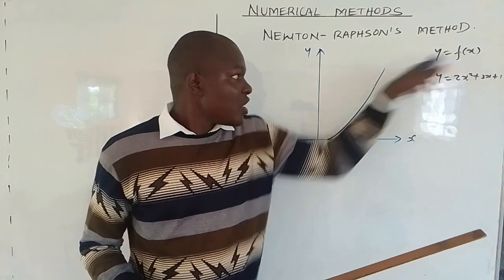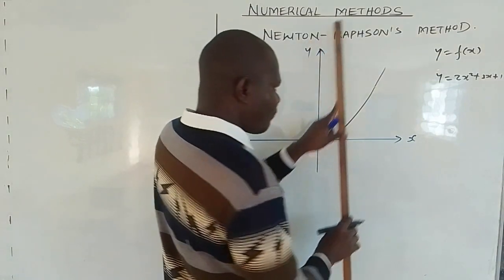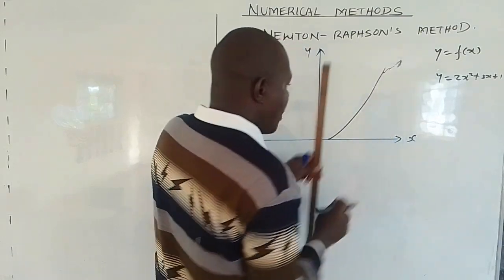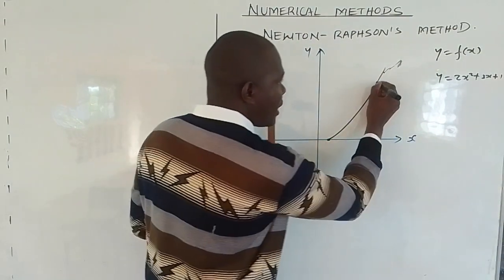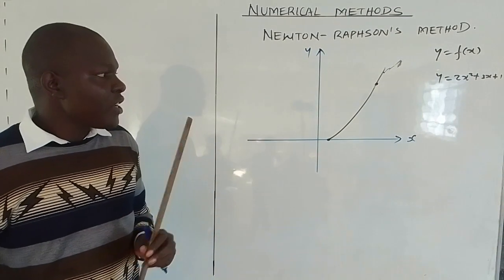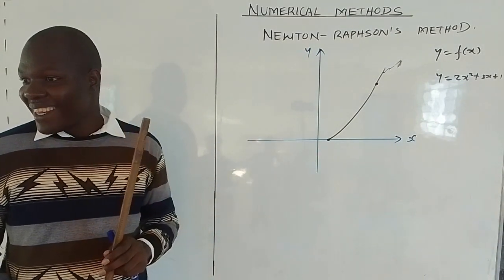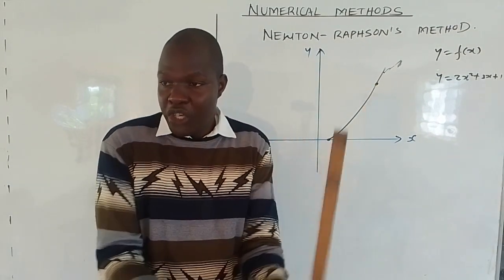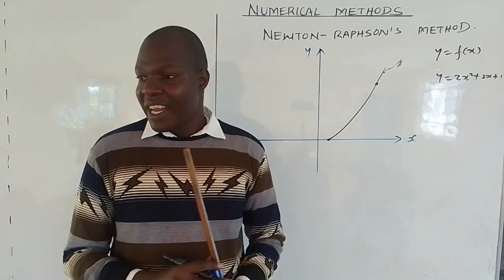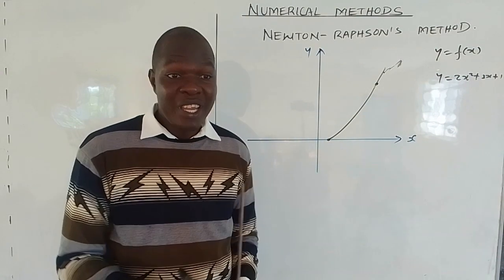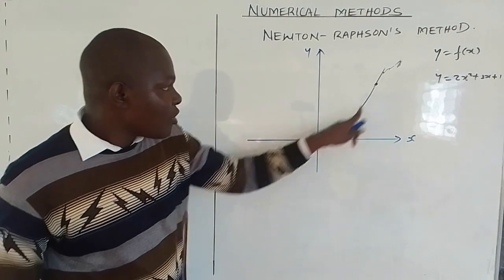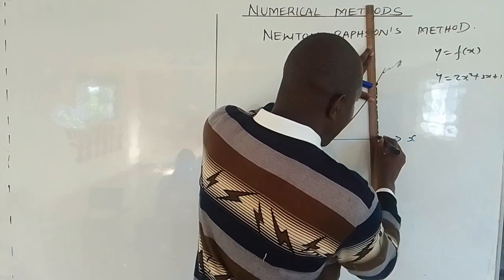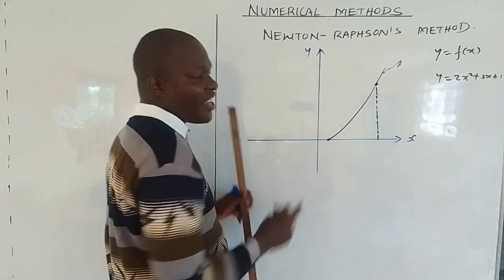If this curve is a function of x, then if we place two points on it, we can actually get the gradient. Remember, the gradient of a curve can only be obtained at exactly one point, but as that small change in the x value tends to zero, you get the gradient at exactly one point, which becomes the derivative. So if you have two points, we will have the change in y and the change in x.